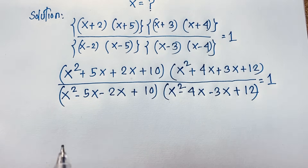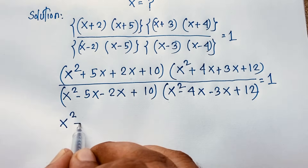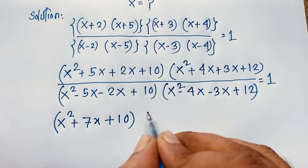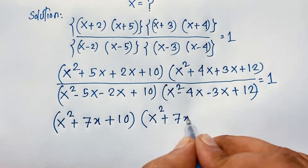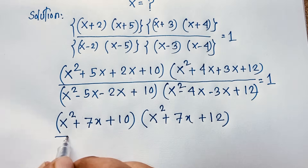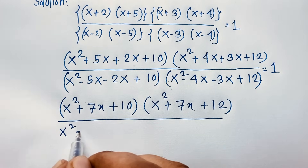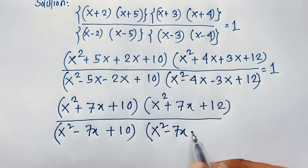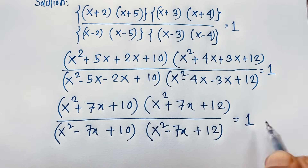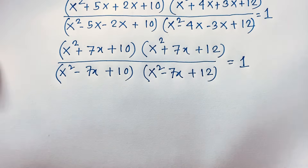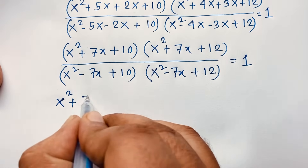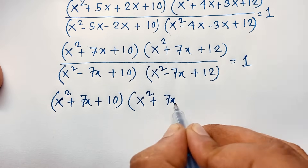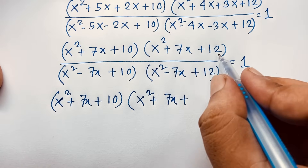Now you can see: x² plus 2x plus 5x gives 7x, plus 10 — so (x²+7x+10). Then (x²+4x+3x+12) gives (x²+7x+12). I solve step by step. In the denominator: (x²-7x+10). Then (x²-7x+12), which equals 10+2, is equal to 1.